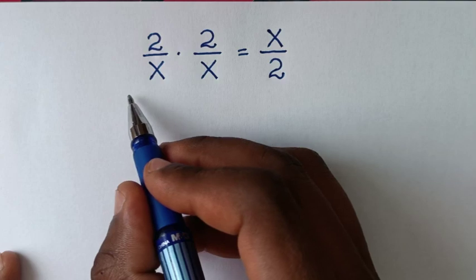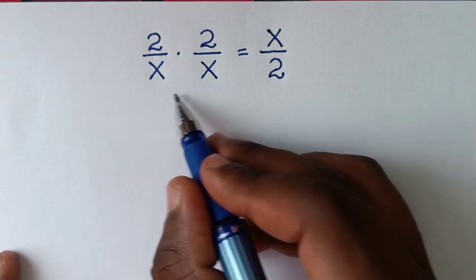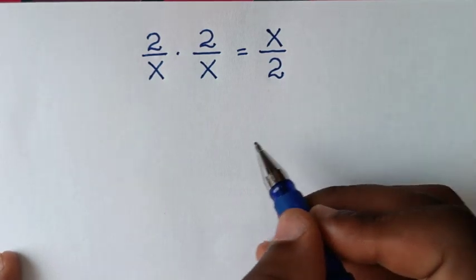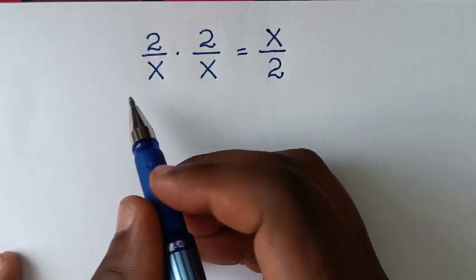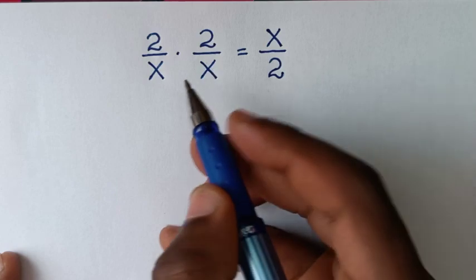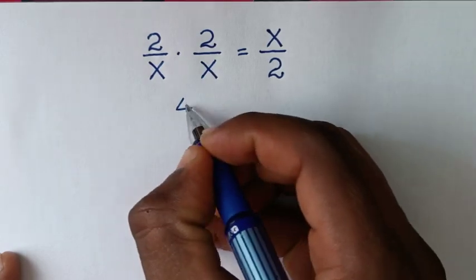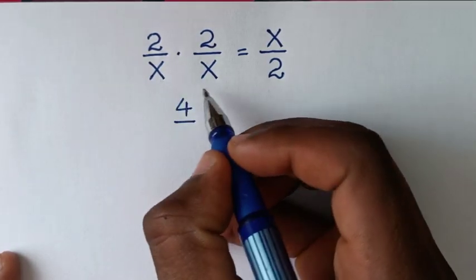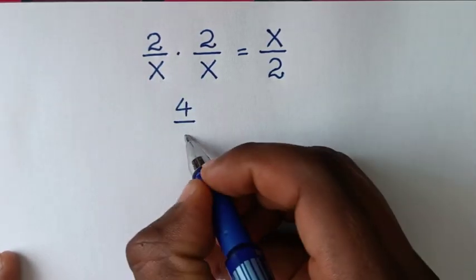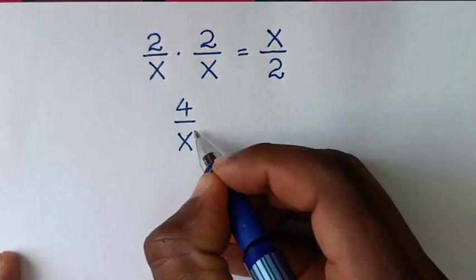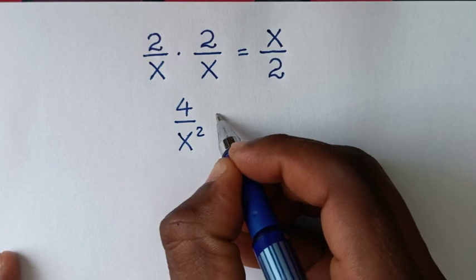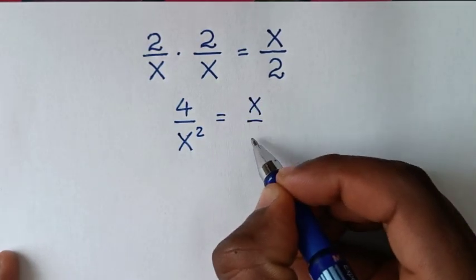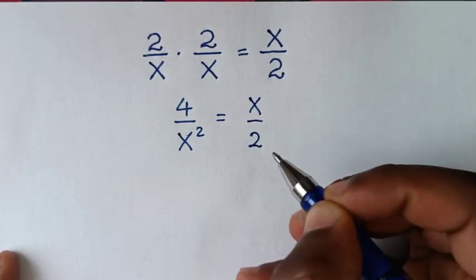To find the values of x from this equation, in the first step we'll take 2 times 2, which is 4, over x times x, which is x squared, is equal to x over 2.